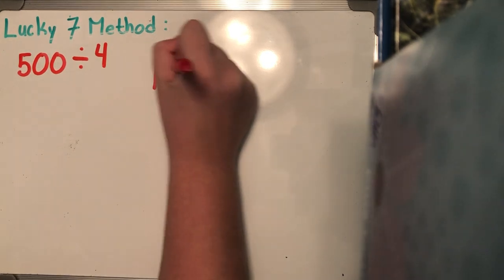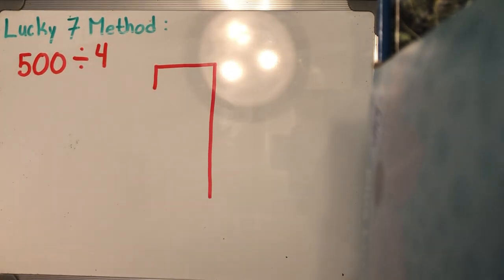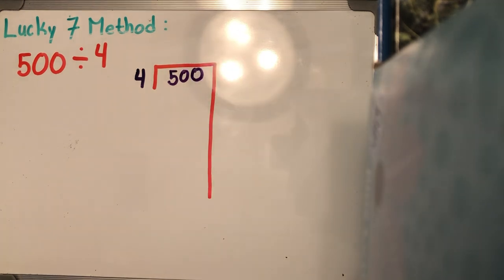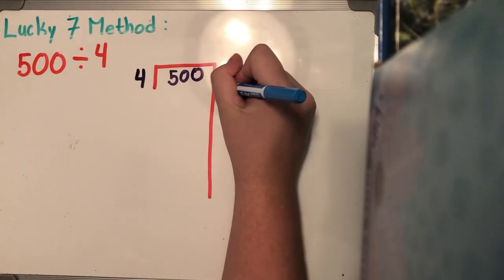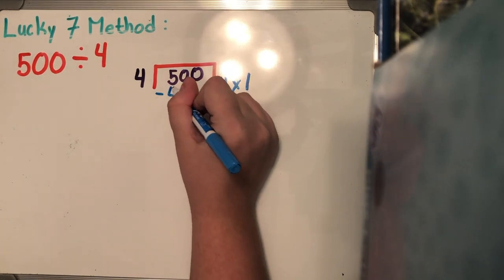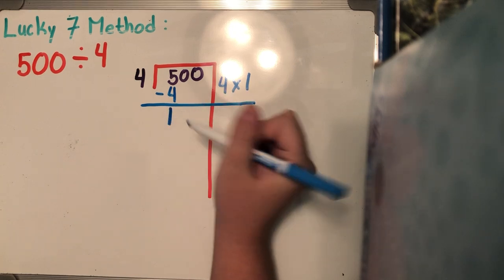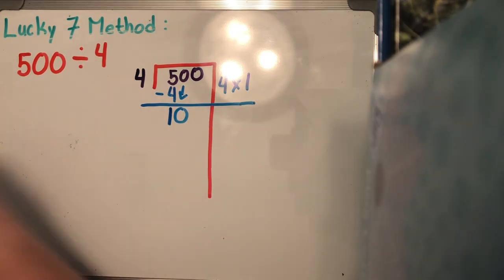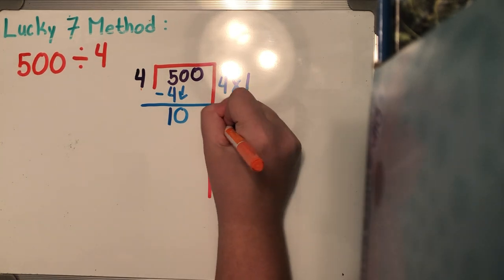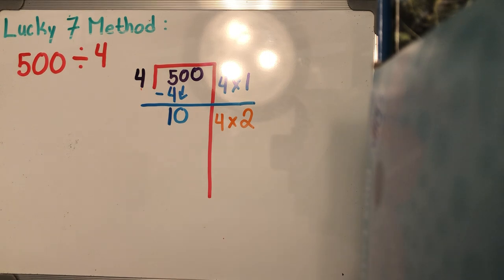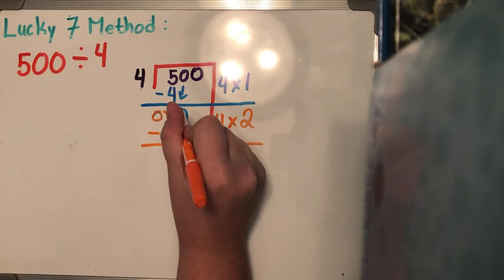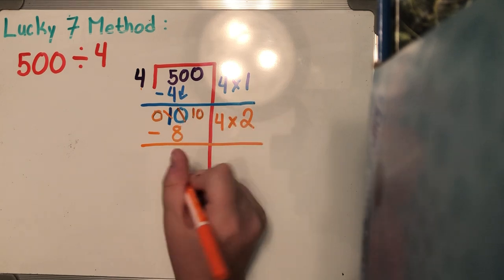The next problem is 500 divided by four. Your divisor goes on the outside of the house, your dividend goes in the middle, and you can start. How many times can four go into five? Four can go into five one time, which is four, so I'm going to subtract four from five and get one, then bring down this zero. How many times can four go into 10 without going over? Four can go into 10 two times because four times two is eight. I'm going to subtract eight from 10 — do your borrowing — and get two.